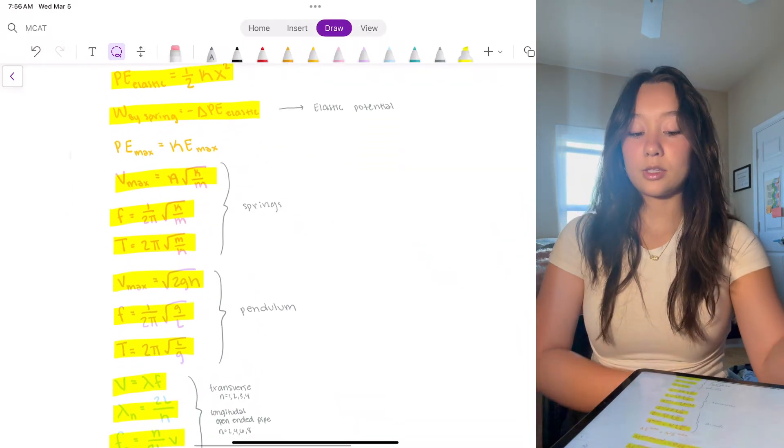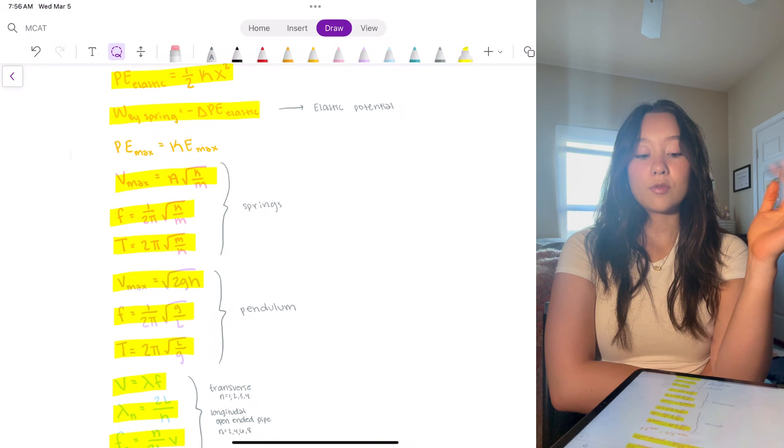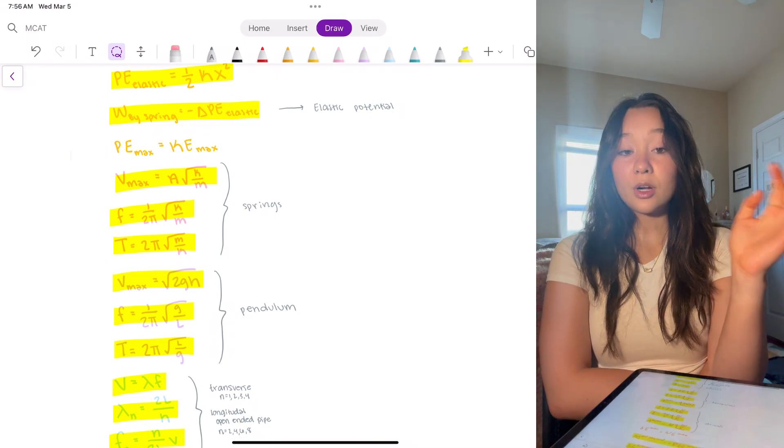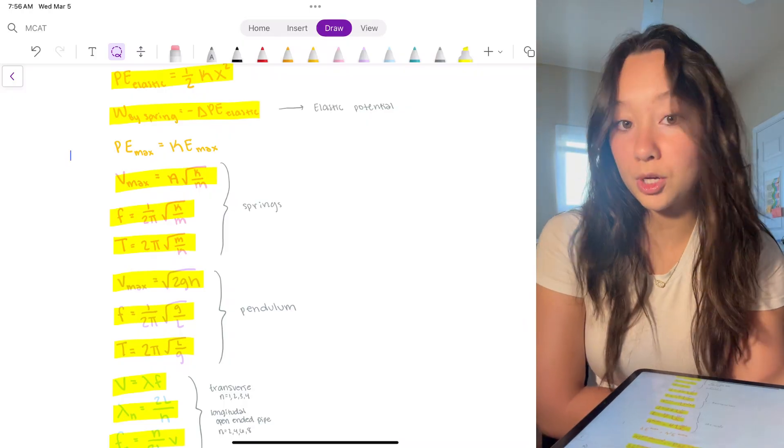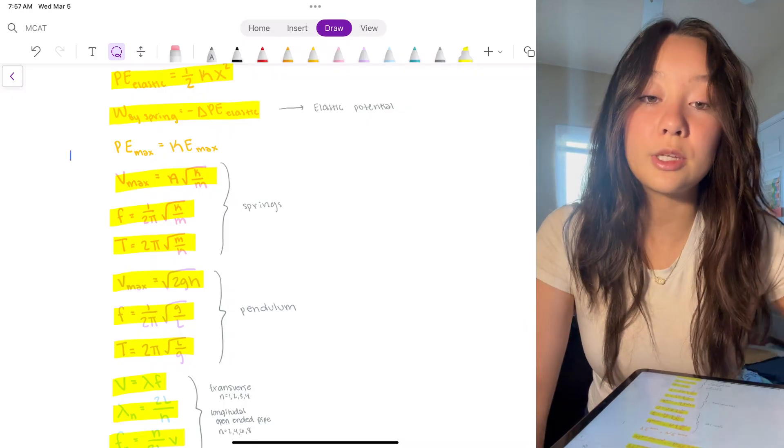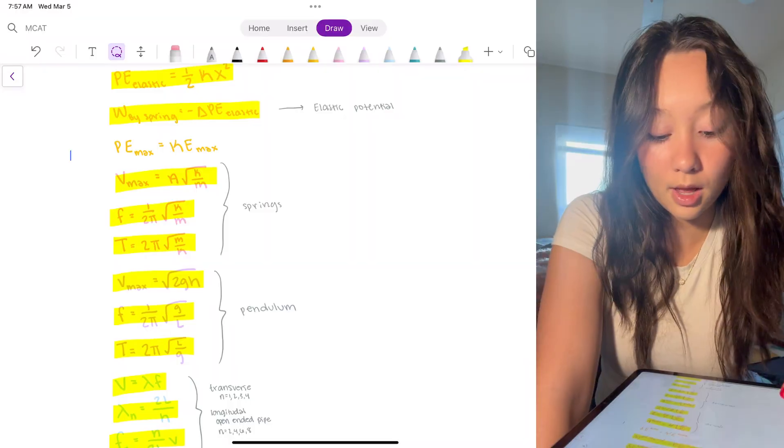All these relationships for springs, basically Vmax, frequency and period for springs and pendulums. These are helpful to know, but again, more about the relationships if you have time. Try to memorize all of these. It might come easier to you if you're familiar with these concepts.